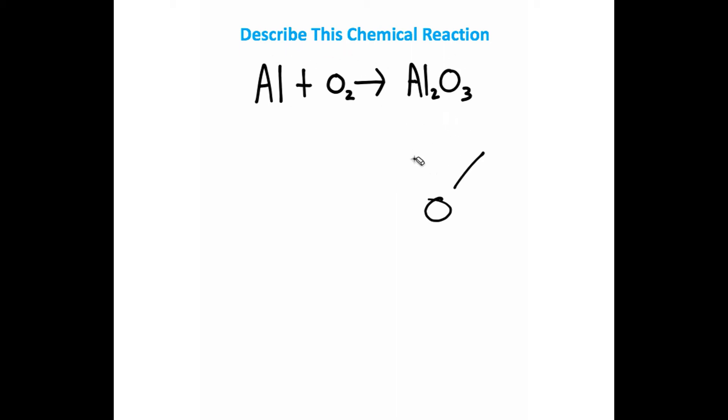But notice we actually run into an issue here. Our equation is unbalanced because if you look closely, we have one aluminum in the reactants, but two aluminum in the products, and we have two oxygen in the reactants, but three oxygen in the products. So we're going to need to find a way to balance this chemical equation.